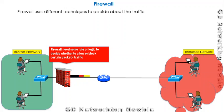For this decision-making purpose, the firewall uses various techniques. The basis for taking these decisions may be based on the source address or the destination IP address.